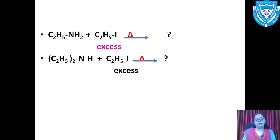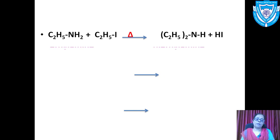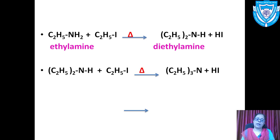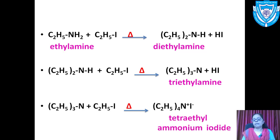In all, from a primary amine, 3 moles of ethyl iodide are required, and from a secondary amine, 2 moles of ethyl iodide are required. In the first step 1 mole is used, in the second step 1 mole, and in the third step 1 mole. From a primary amine to tetraethyl ammonium iodide, 3 moles are needed in total.